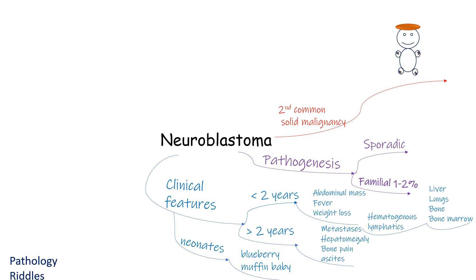Coming to clinical features: when the patient is less than two years of age, it presents with abdominal mass, fever, and weight loss. If the patient is more than two years of age, it may remain unnoticed but can be detected because of metastasis, causing hepatomegaly, ascites, and bone pain. Sometimes disseminated neuroblastomas manifest with multiple cutaneous metastases — deep blue discoloration of the skin, called blueberry muffin baby.